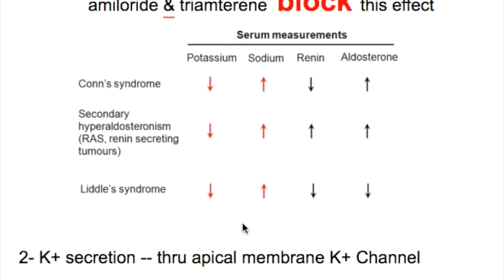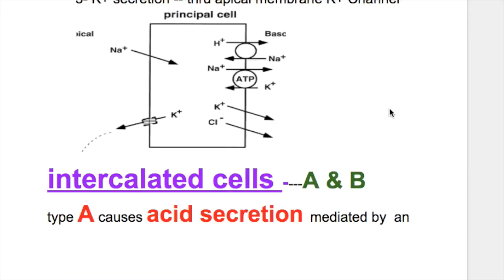The difference between Liddle syndrome, Conn syndrome, and secondary hyperaldosteronism (due to renin-secreting tumors): in all three, sodium is increased and potassium is decreased. However, in Liddle syndrome both aldosterone and renin are decreased; in renin-secreting tumors both aldosterone and renin are increased; and in Conn syndrome aldosterone is increased but renin is decreased.